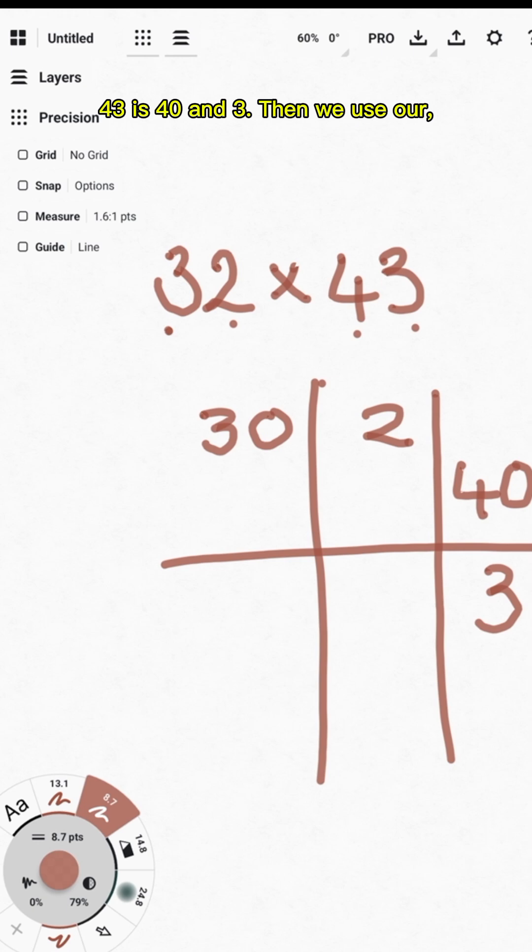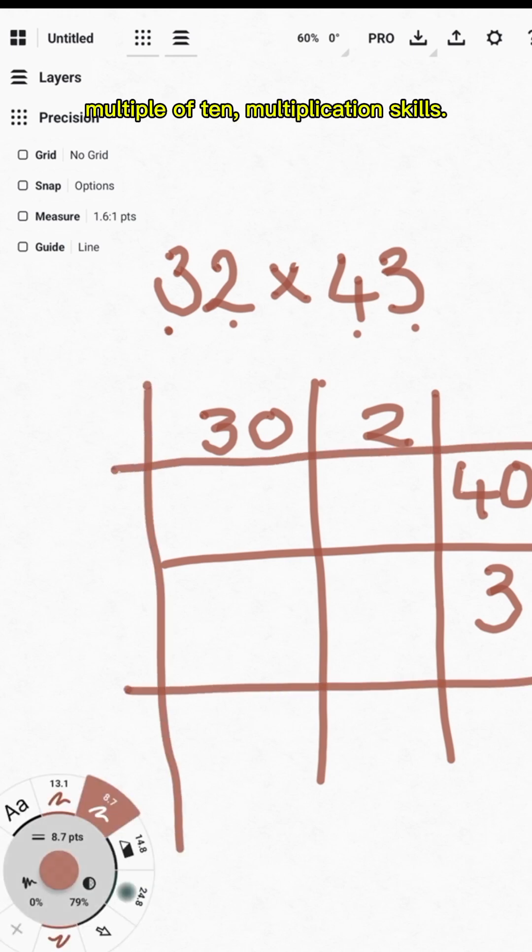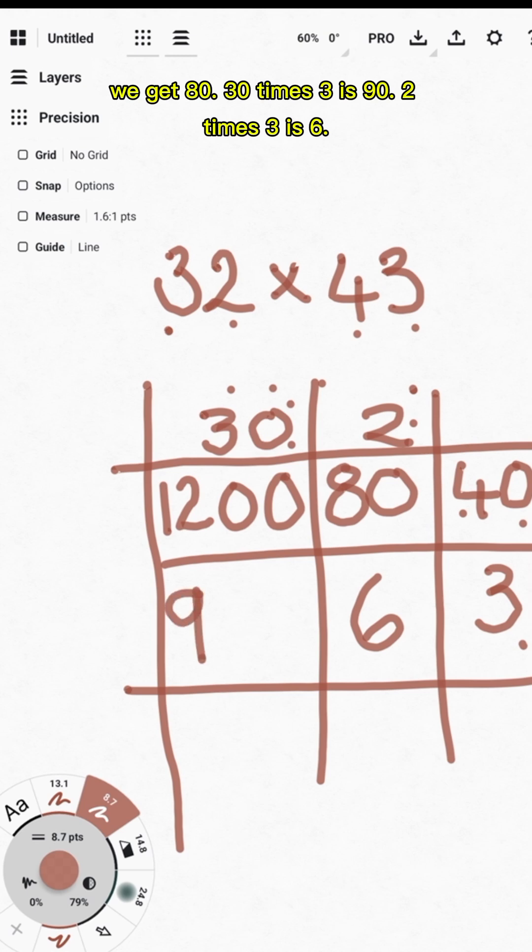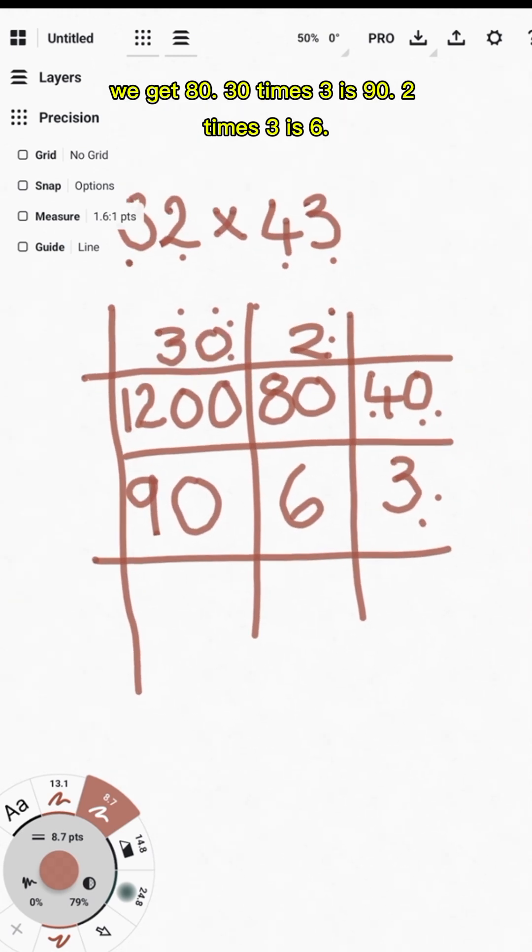Then we use our multiple of 10 multiplication skills. 30 times 40. 3 times 4 is 12. Two zeros we have 1200. 2 times 40. We get 80. 30 times 3 is 90. 2 times 3 is 6.